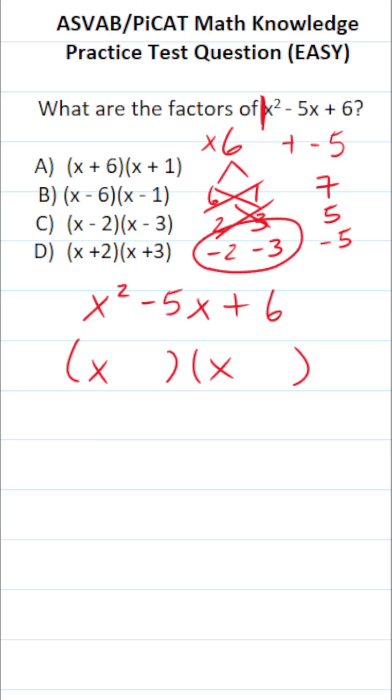So to factor this one, it's going to be x minus 2, x minus 3, which you can see is answer choice C.